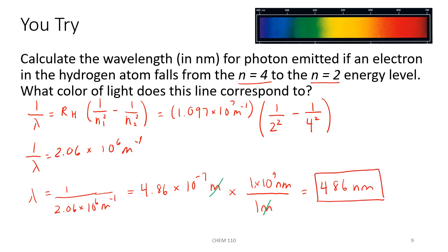Looking at the visible spectrum, 486 nanometers falls in the blue-green region. So the color of the line that we would see would be green.